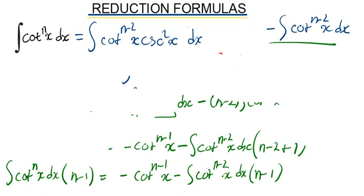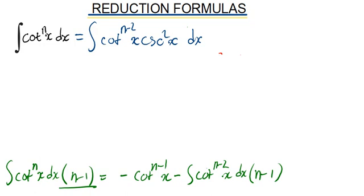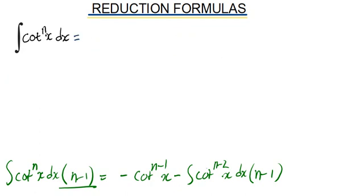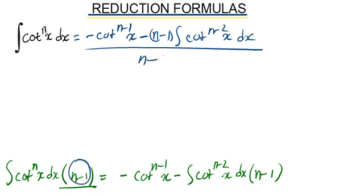This brings us to the final reduction formula. Dividing both sides by (n-1), the integral of cotangent^n(x) dx equals minus cotangent^(n-1)(x) divided by (n-1), minus the integral of cotangent^(n-2)(x) dx. This is the reduction formula for cotangent. Thank you very much for watching.